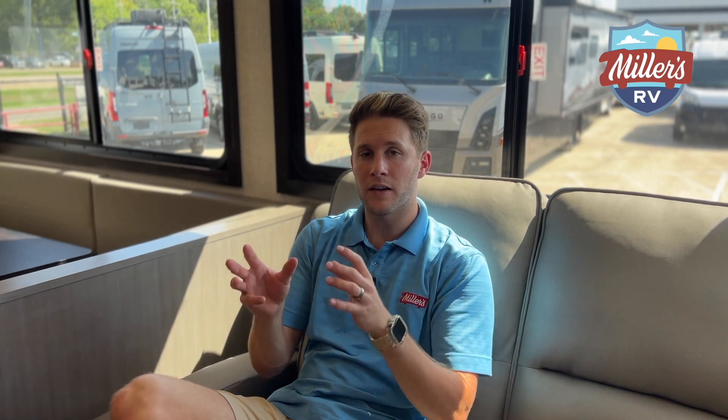An inverter — I've talked on a few of our videos about whether an RV has an inverter or is prepped for an inverter. A lot of stuff doesn't come with an inverter; some of your nicer motorhomes will, but travel trailers typically don't. What an inverter does is it converts DC to AC — so 12 volt to usable 120 volts.